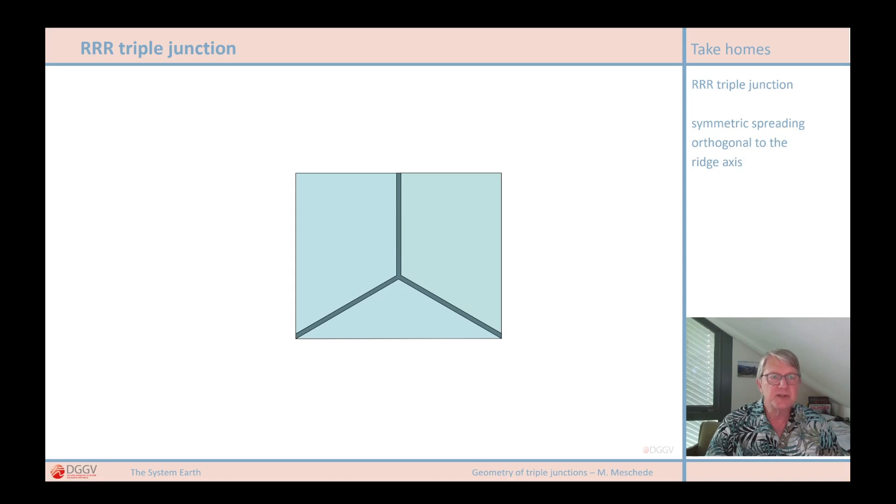There are several examples of this type of triple junction on Earth, however, not quite as symmetrical as this example. I'll show two of them in the next video. Now, let's first have a look at the principle of movement.